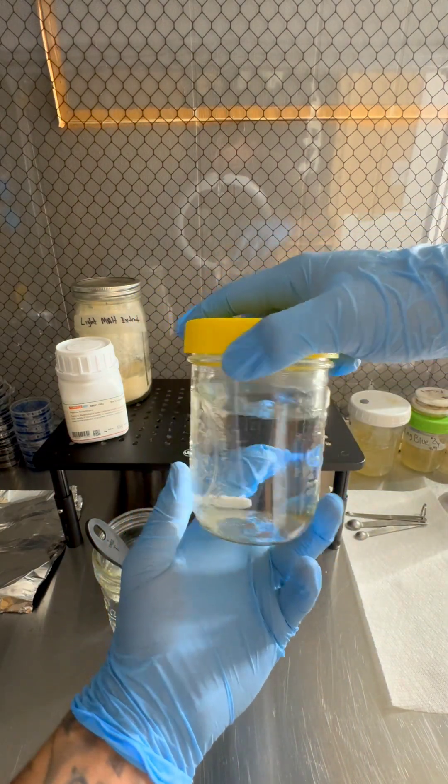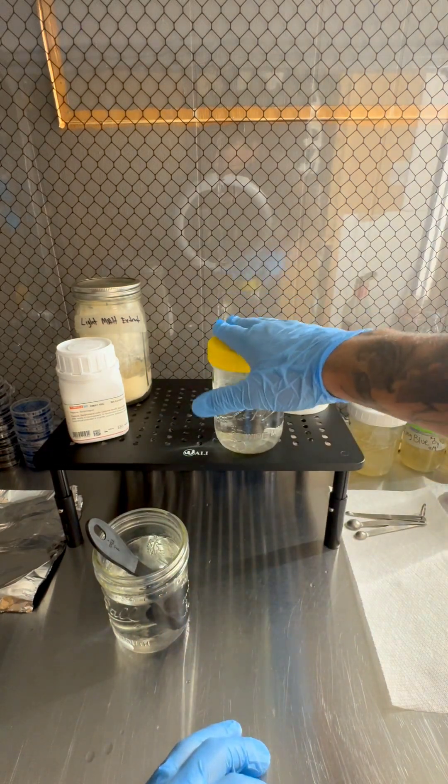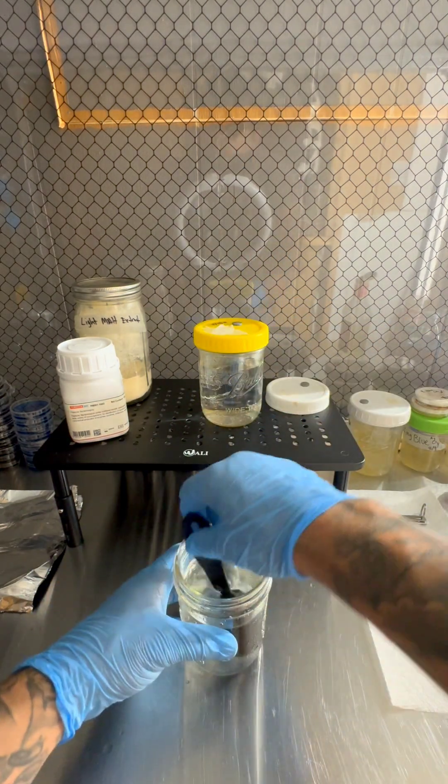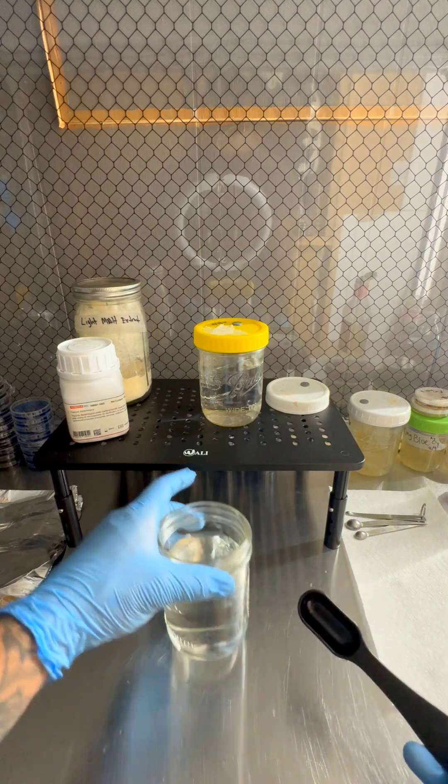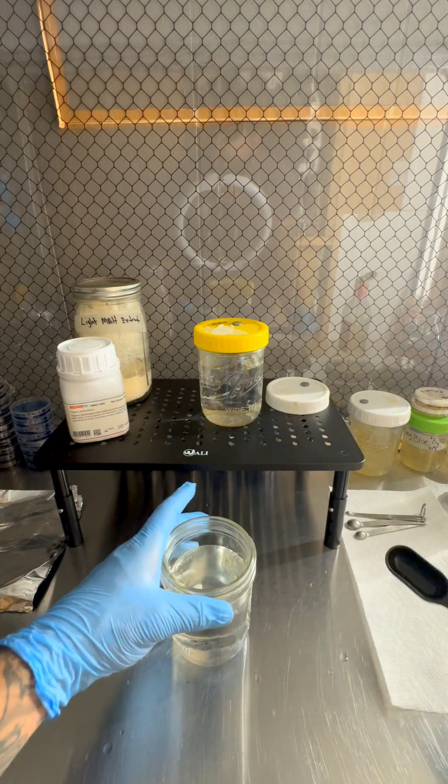300 milliliters of water, one tablespoon of Karo's corn syrup. So that's going to be your basic liquid culture. And then I'm going to show you my recipe. So this is also 300 milliliters of water with one tablespoon of Karo's already in there.